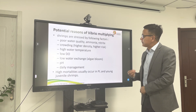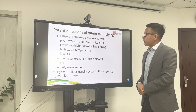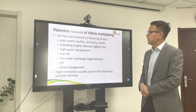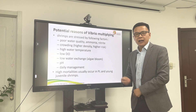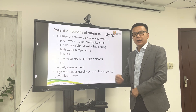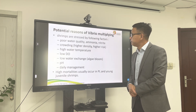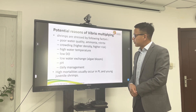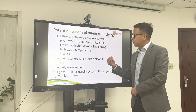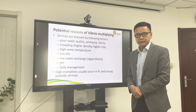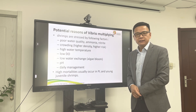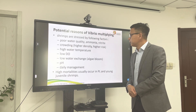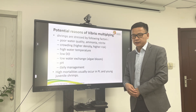The potential reasons for Vibrio multiplying: when your shrimp are under stress from the following factors. Poor water quality — high ammonia and nitrite will definitely damage the hepatopancreas. Then you should stop feeding or reduce feed. Another factor is overcrowding. From different countries, the density varies a lot. In China, we can reach 1500 PL per square meter, but in India and Ecuador, only 5 to 10 or 20 to 30 per square meter.